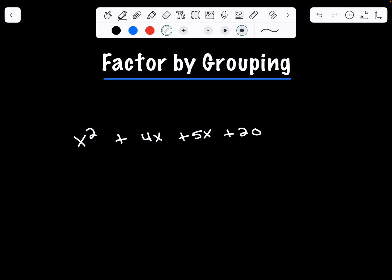Step number one to factor this polynomial is to break this polynomial into two pairs. For example, we have (x² + 4x), that's one pair, plus (5x + 20). Keep in mind we have not changed anything. We've just broken this into two different pairs.